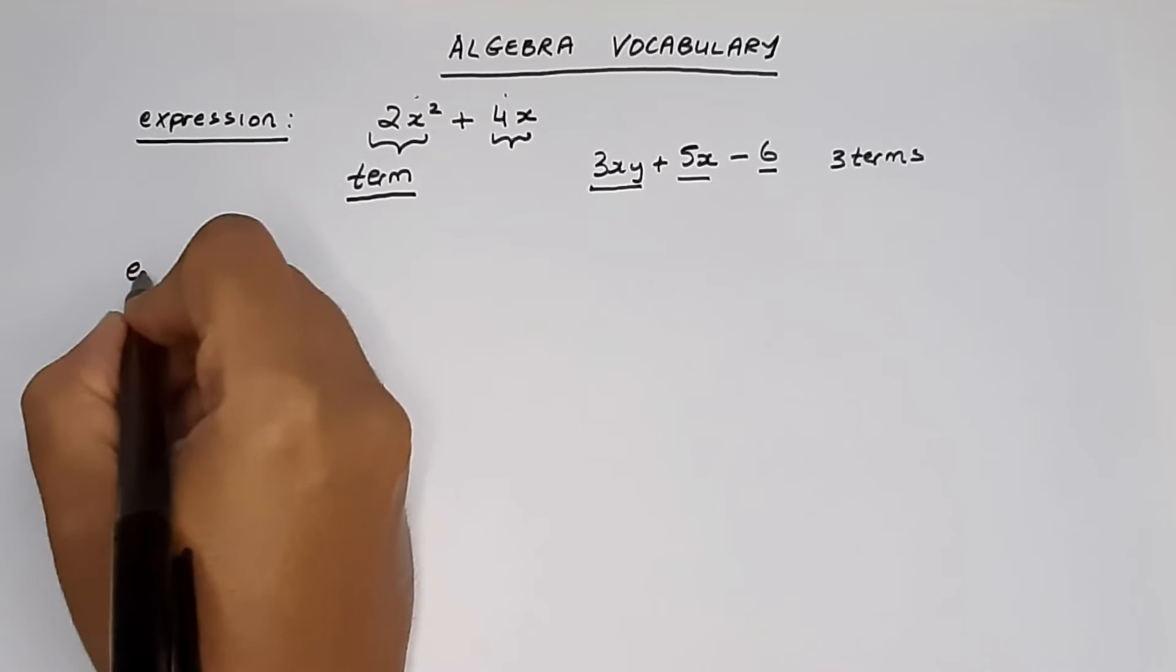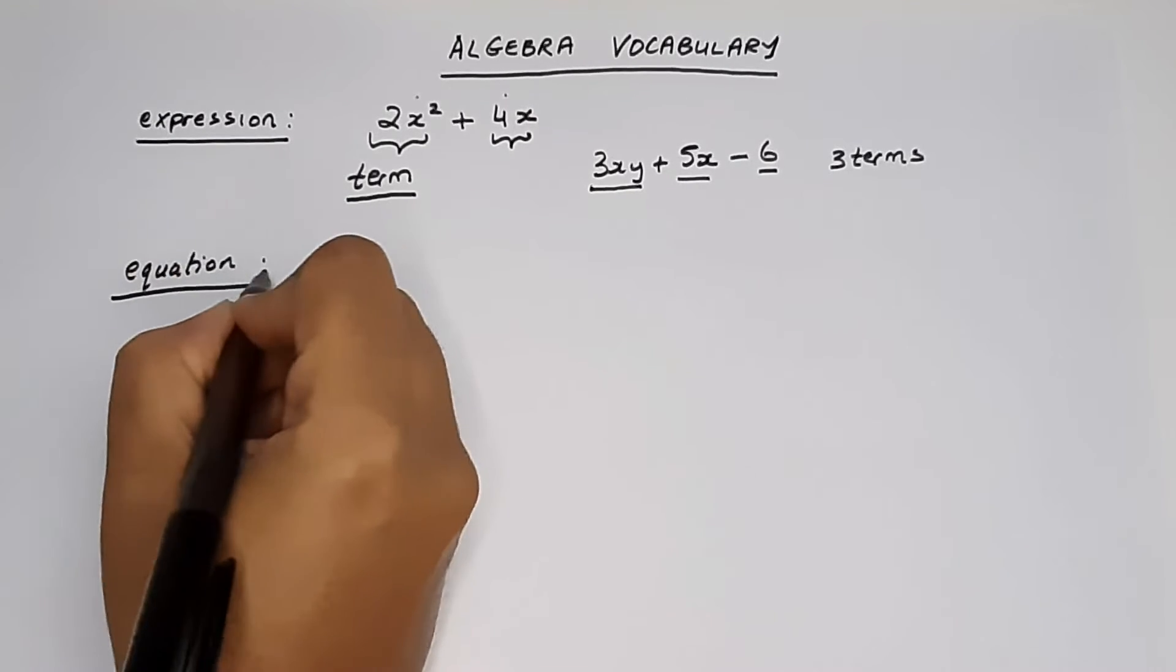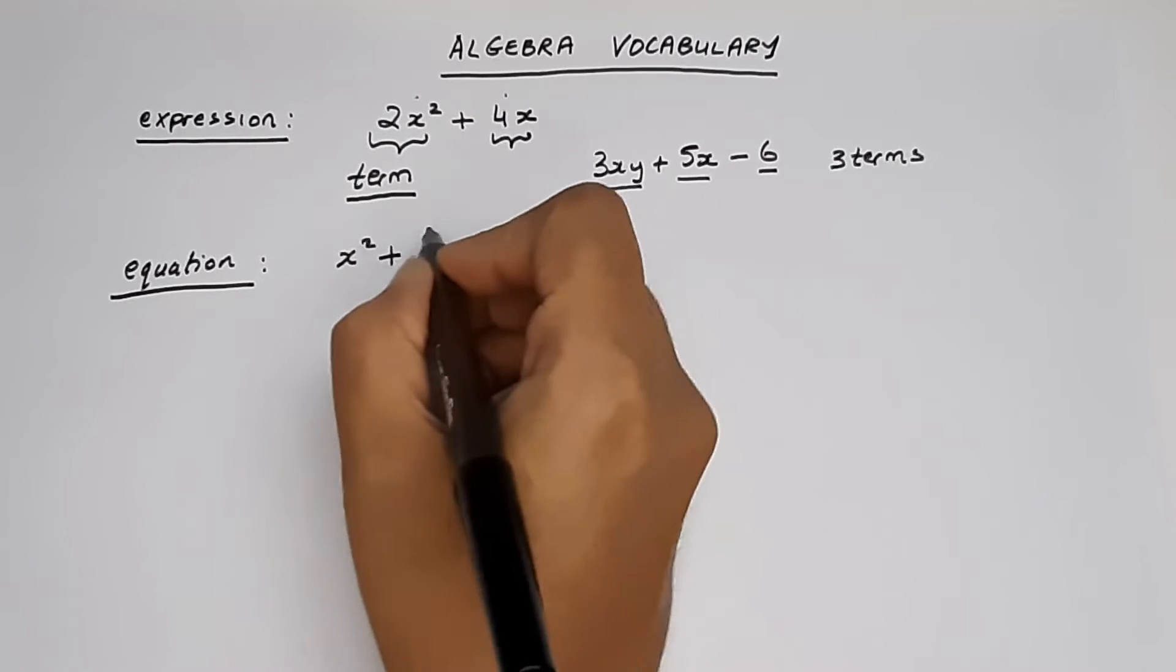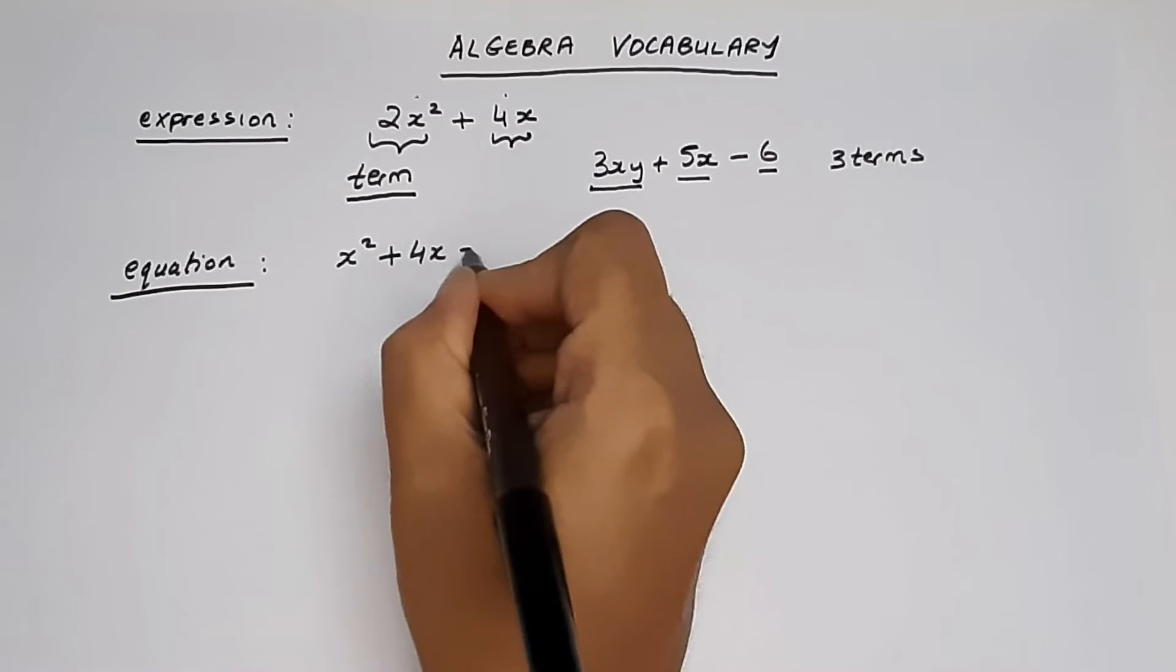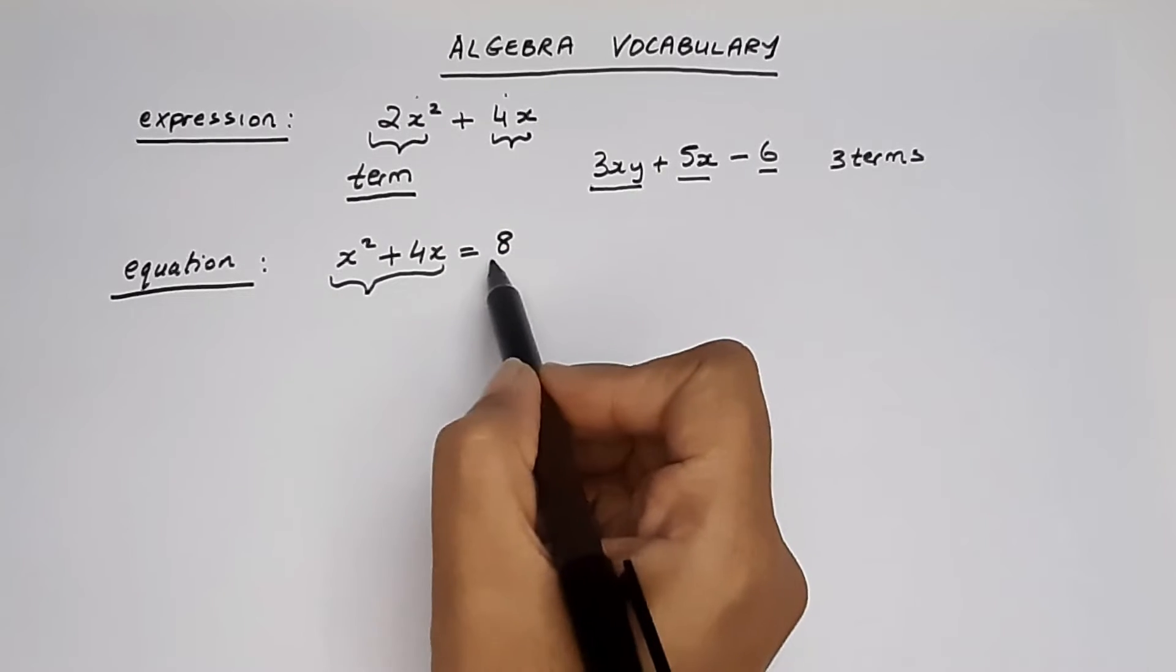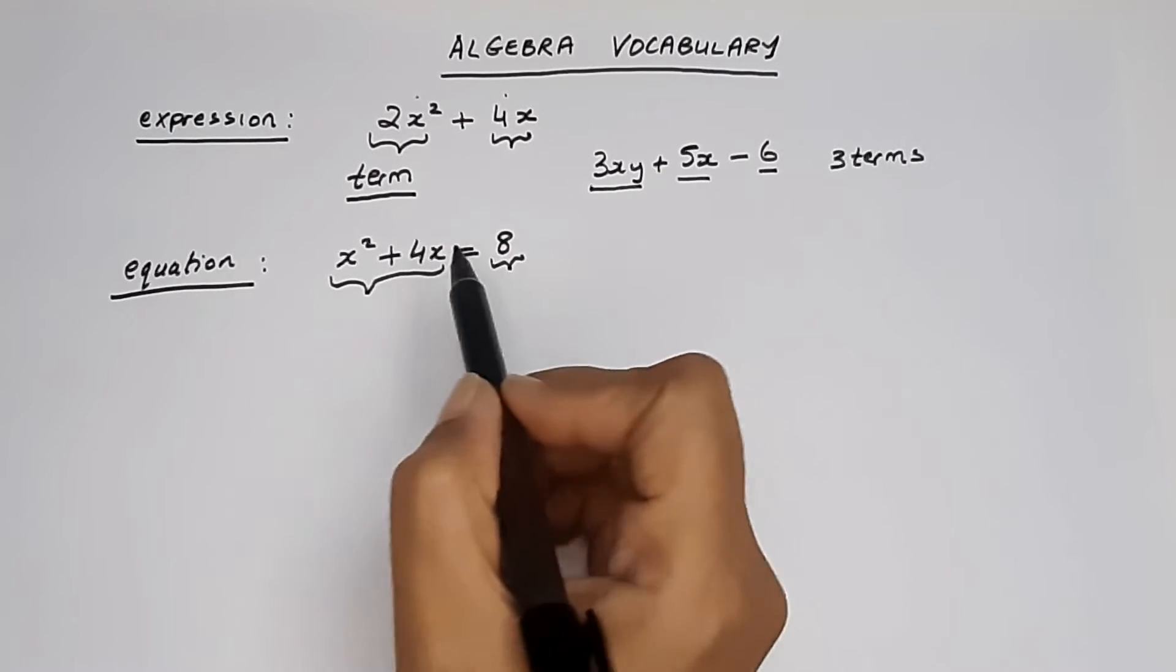Next, an equation. From the name, I guess you would have guessed it has an equal to sign. x squared plus 4x is equal to 8. Basically tells you what's this side is equal to what is on this side of the equal to sign.